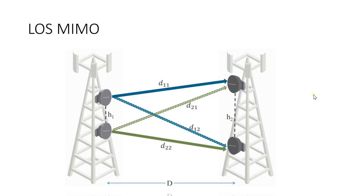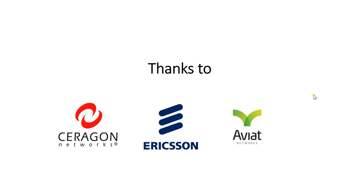In LOS MIMO, two antennas on both ends of the link use the same frequency and same polarization, and multiple bit streams are transmitted. To separate these streams at the receiver, a constant phase shift is introduced between the two waves, achieved by physically separating the antennas — H1 and H2 — at both Site A and Site B. This is how line-of-sight MIMO is implemented. These techniques have been gathered from various vendors and are not deployed by any single vendor alone.